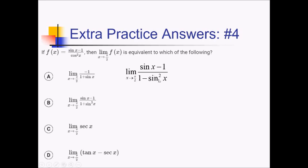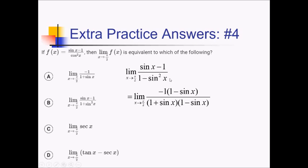This doesn't fully solve the problem yet — plugging in pi over 2 still gives a mess. So we factor further. In the numerator, I factor out a negative to get negative 1 times parentheses 1 minus sine of x. In the denominator, 1 minus sine squared factors as 1 plus sine of x times 1 minus sine of x — that's a squared minus b squared pattern. The 1 minus sine of x terms cancel, leaving us with negative 1 over 1 plus sine of x as x approaches pi over 2, which is answer choice A.